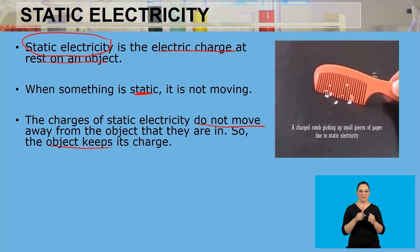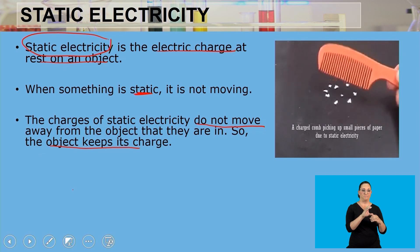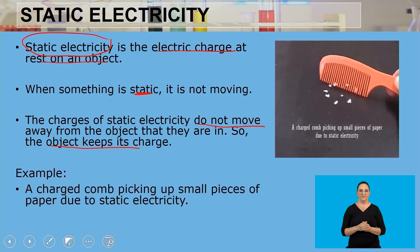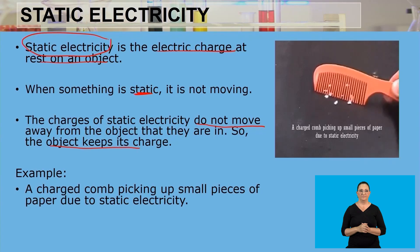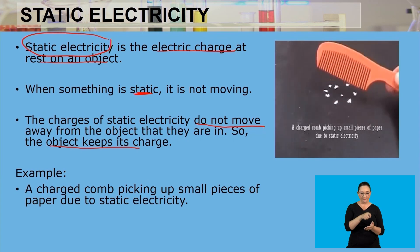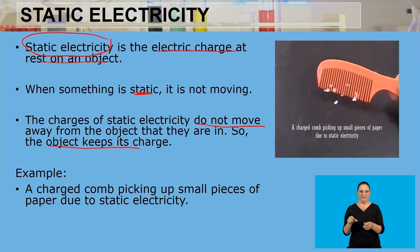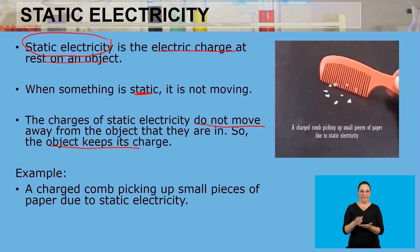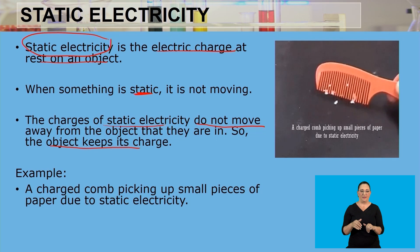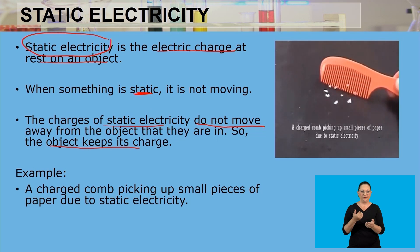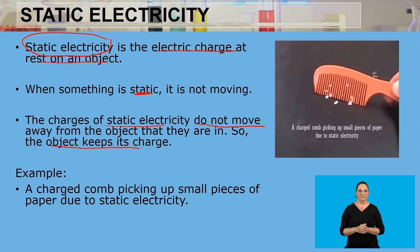So the object is going to keep its charge because we're talking about static electricity — static means something is stationary, it is not moving. So the object is going to retain its charge because those charges are not going to be moving away from it. For example, a charged comb picks up small pieces of paper due to static electricity, as we can see here.